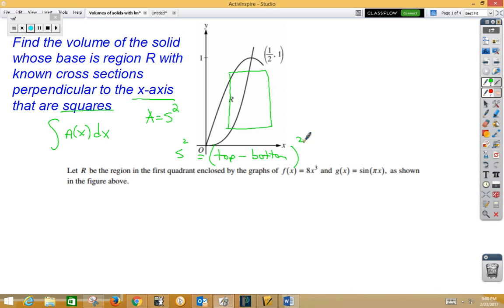Let's take a look. They did give us our bounds, which would be from 0 to 1/2 in terms of x. We are doing the area function, which in this case is side squared dx.